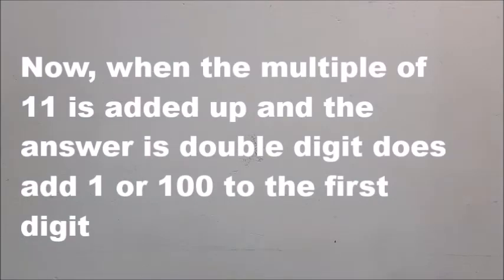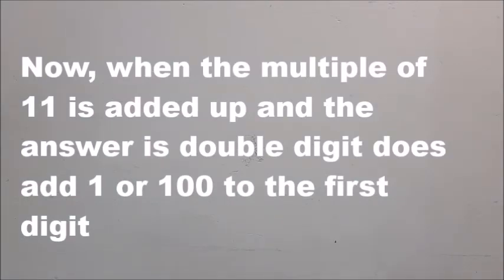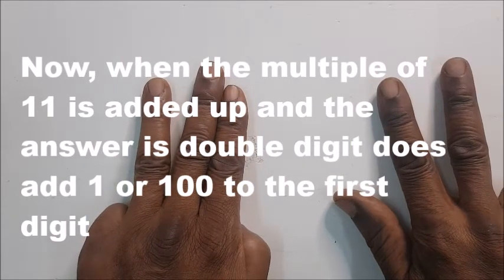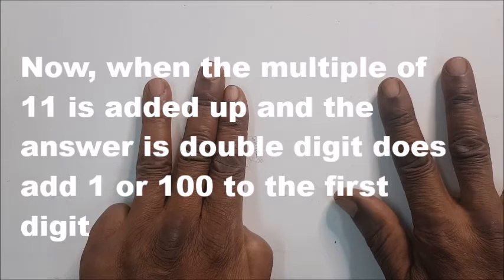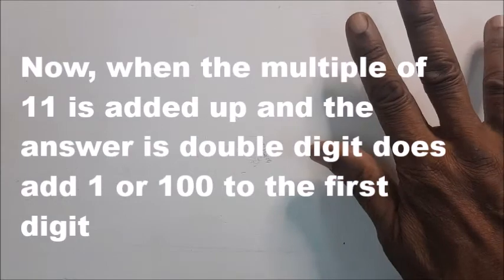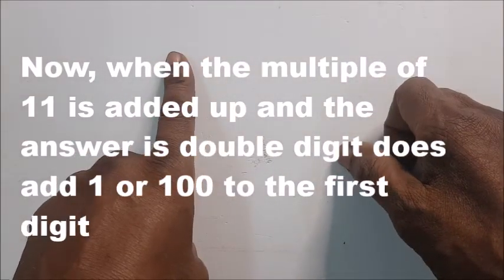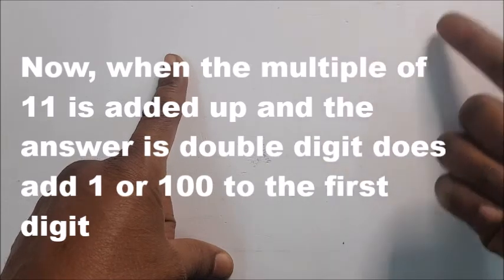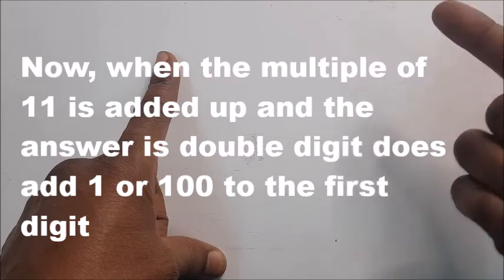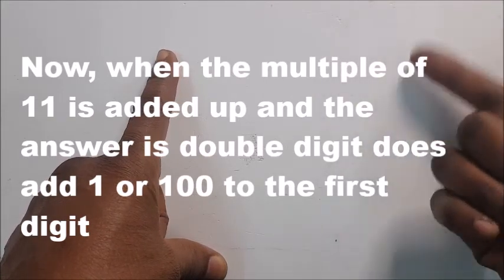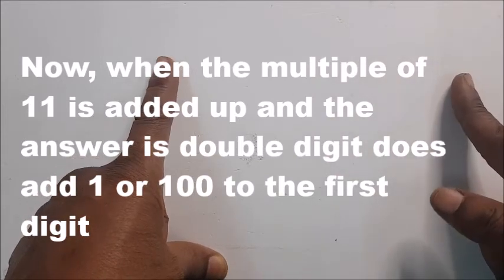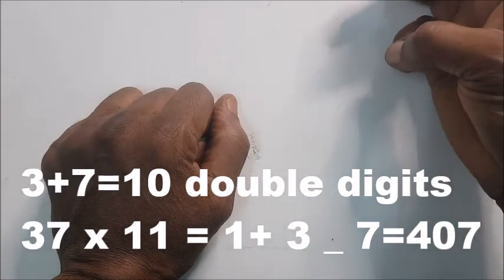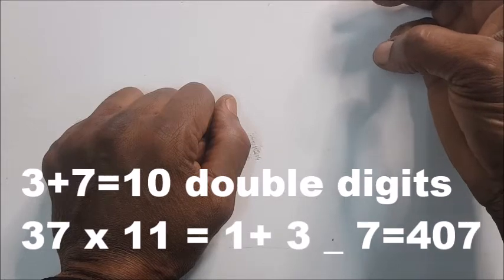Now let's shoot on to double digits. For instance, if you are given 37, 37 times 11. First step is to add up the 3 and then the 7. This is double digits.